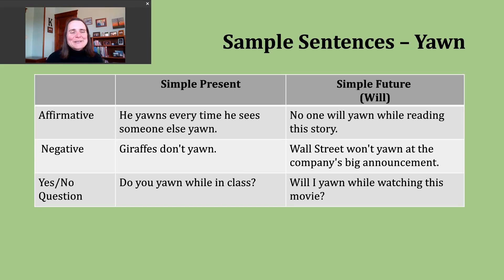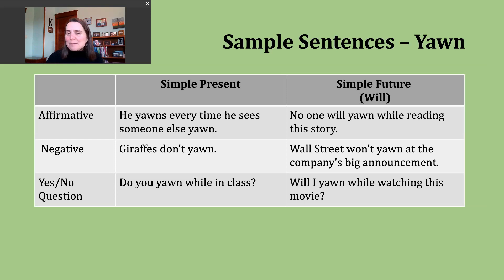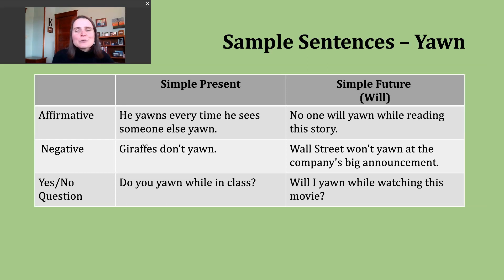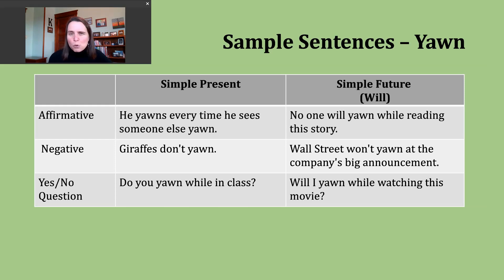Finally, let's look at making a yes-or-no question in the simple future. To do this, I start with 'will,' then my subject, and then the base verb. You can see that in the example: 'Will I yawn while watching this movie?' So maybe I'm asking a friend who's already seen it — I'm kind of wanting to know, did they find it interesting or am I going to be bored with it?